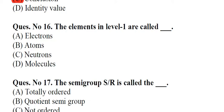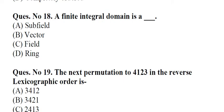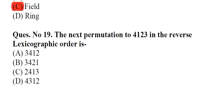Question number 16: The elements in level 1 are called underscore. A. Electrons, B. Atoms, C. Neutrons, D. Molecules. Answer: B, Atoms. Question number 17: The semi-group S/R is called the underscore. A. Totally ordered, B. Quotient semi-group, C. Not ordered, D. Completely ordered. Answer: B, Quotient semi-group. Question number 18: A finite integral domain is a underscore. A. Subfield, B. Vector, C. Field, D. Ring. Answer: C, Field.